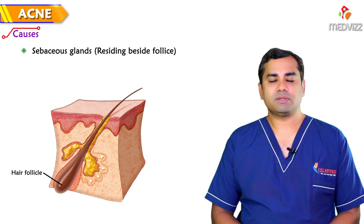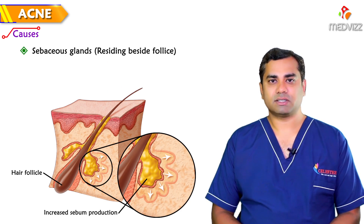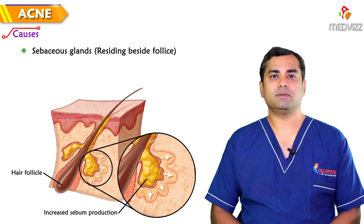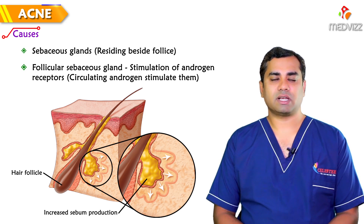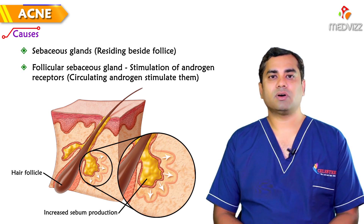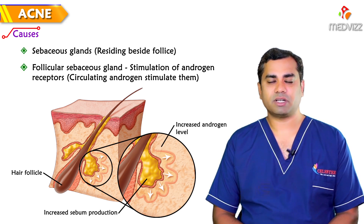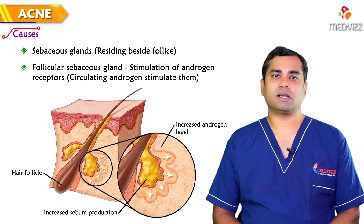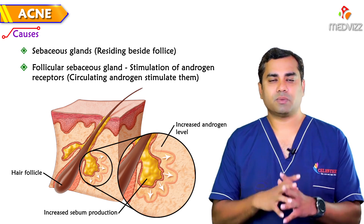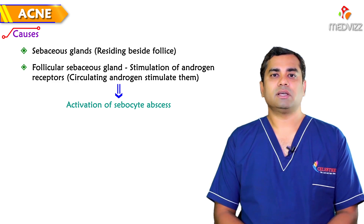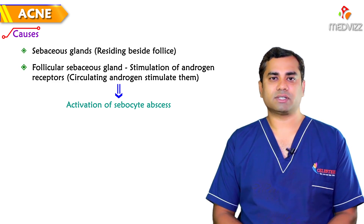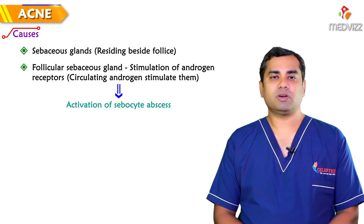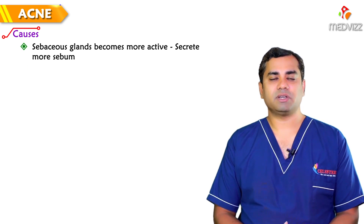Acne happens as a disorder of sebaceous glands residing beside the follicles. These follicular sebaceous glands are stimulated by circulating androgens acting on androgen receptors — there is widespread activation of this sebocyte axis. Because of that, the sebaceous glands become more active and secrete more sebum.